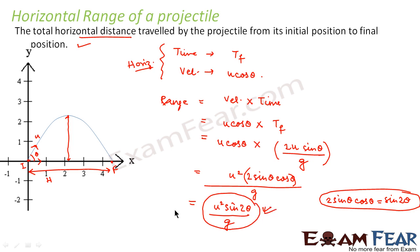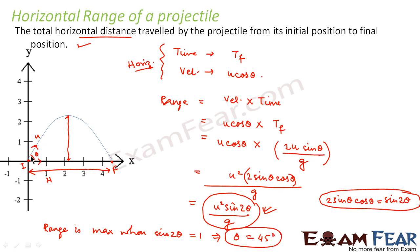The range is maximum when sin2θ has its maximum value, that is when sin2θ = 1, which means θ = 45°. So when you throw a projectile at an angle of 45° with the horizontal, it covers the maximum possible range. We have now studied the equations of motion for a projectile, the nature of its path, and terminologies like maximum height, horizontal range, time to reach maximum height, and total time of flight.